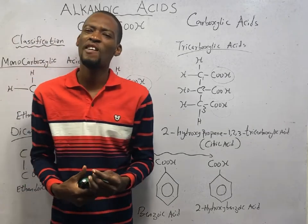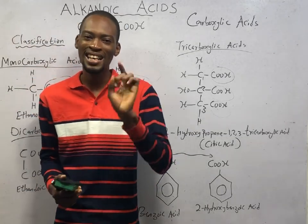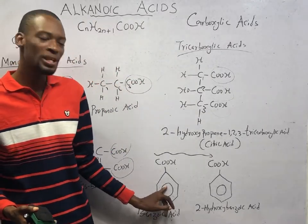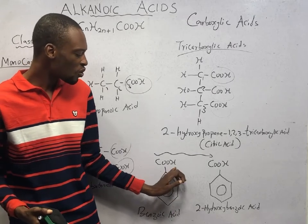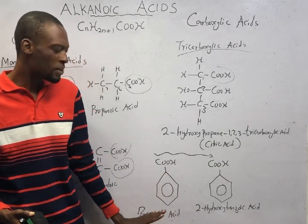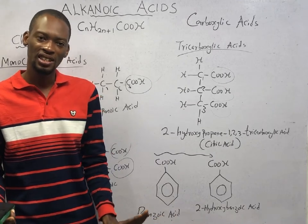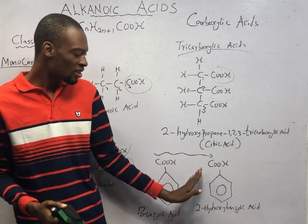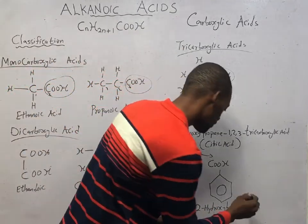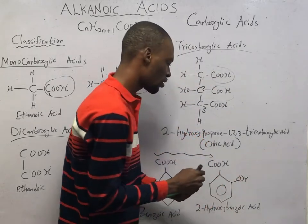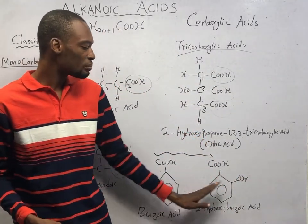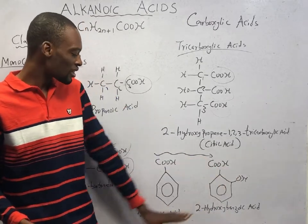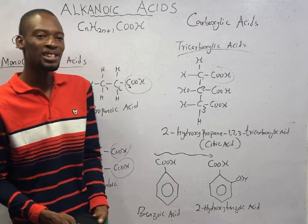We also have aromatic carboxylic acids. The first example is benzoic acid — when the benzene ring has a COOH attached, it is benzoic acid, and it is aromatic. Another example of an aromatic carboxylic acid is 2-hydroxybenzoic acid, which contains both an OH group and a COOH group attached to the benzene ring.